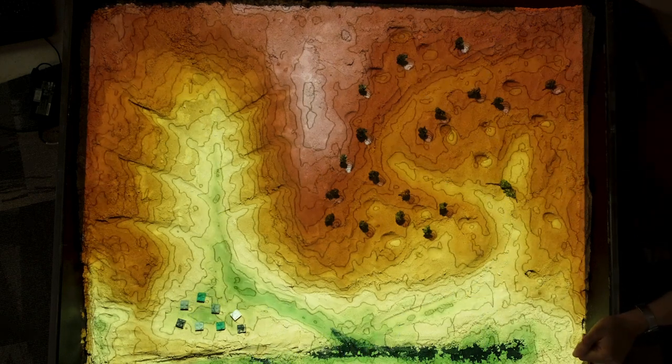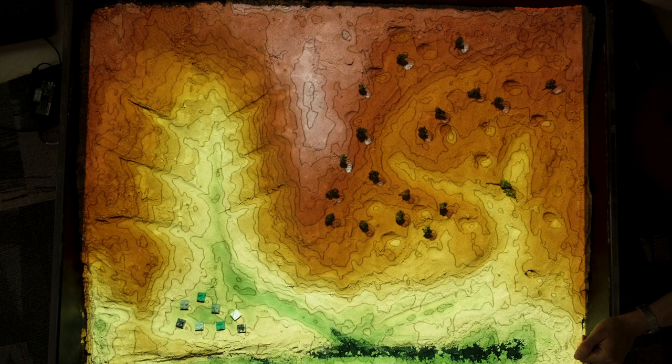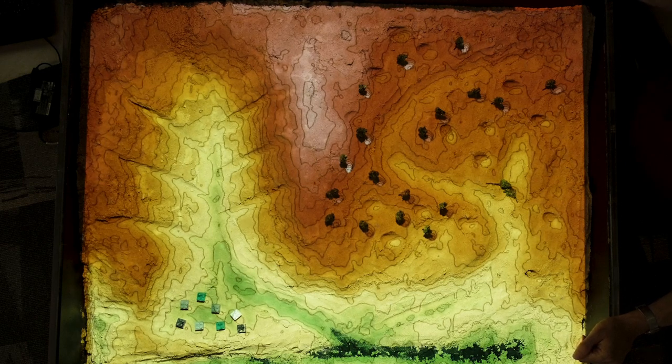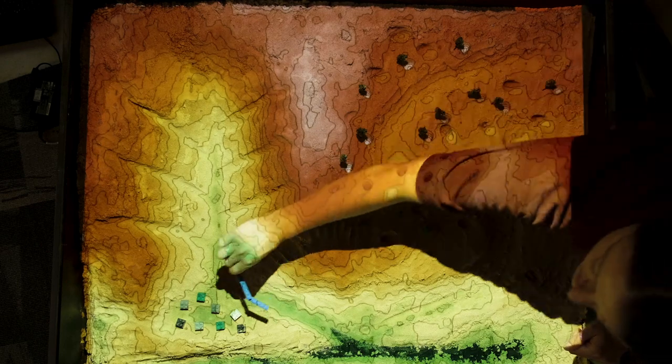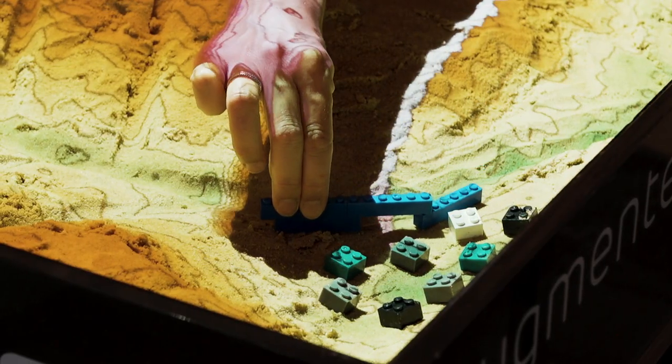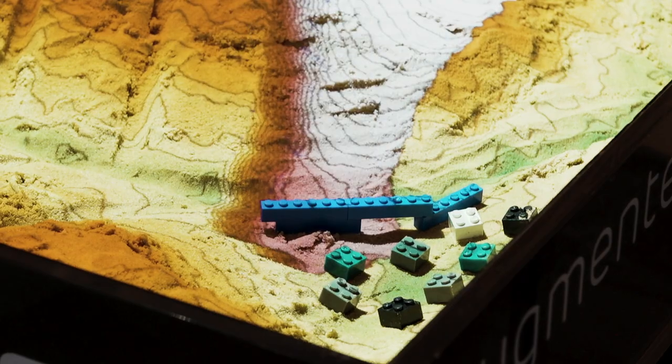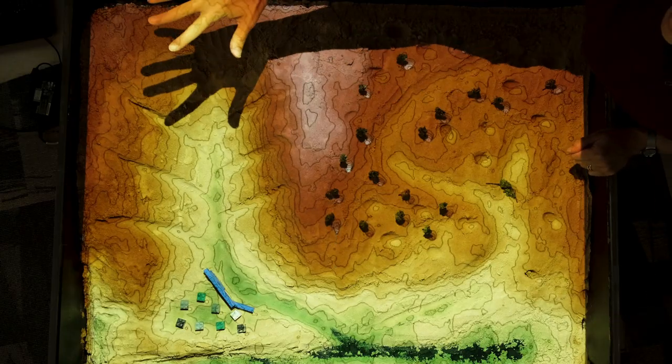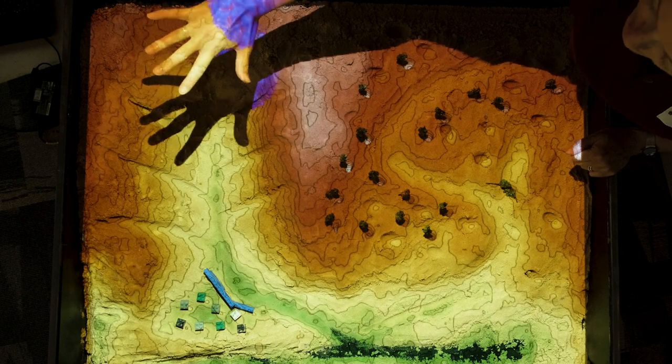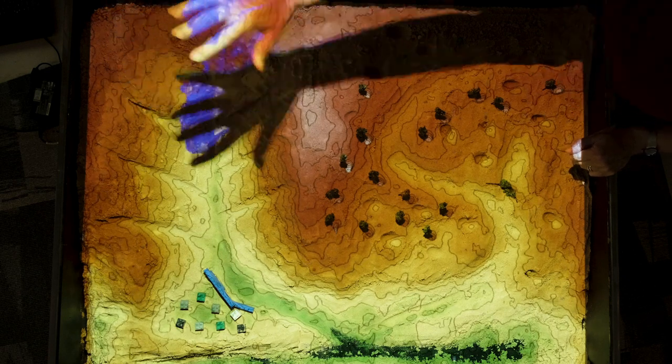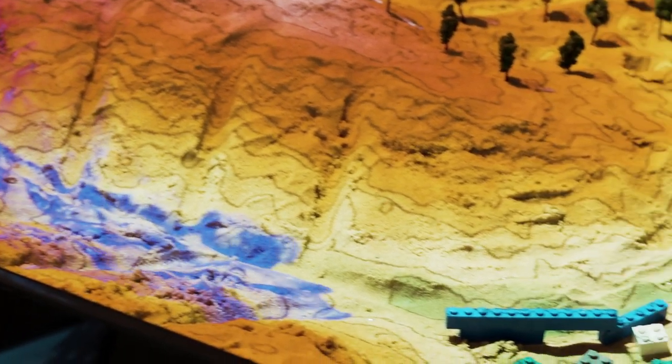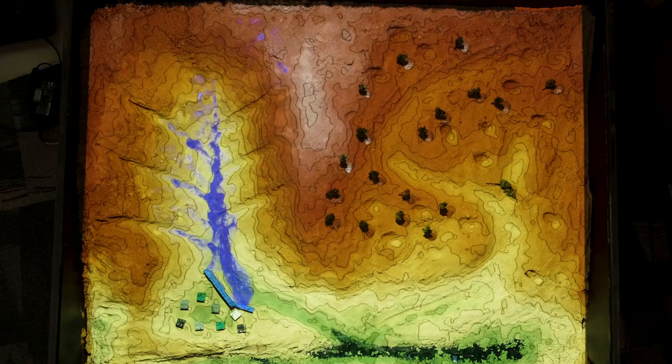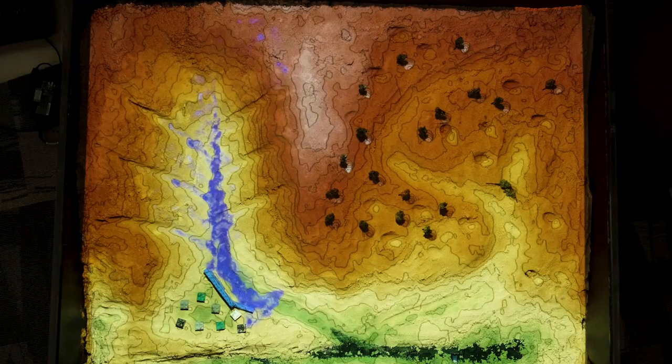To reduce the risk of flooding in the settlement at the bottom of the catchment we can build engineered flood defenses. We can just represent these with some Lego bricks here and position those in. Then if we rain on the catchment again we can see what difference that those make. You can see that that wall has now protected the settlement from flooding.